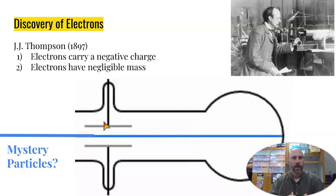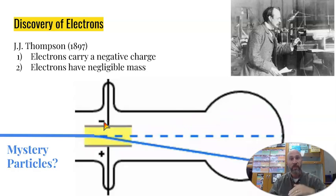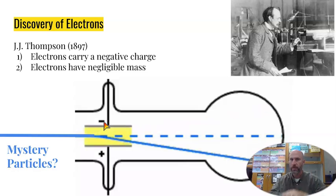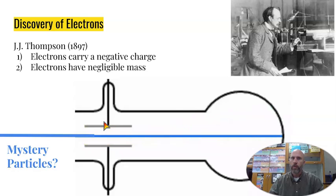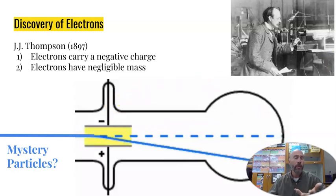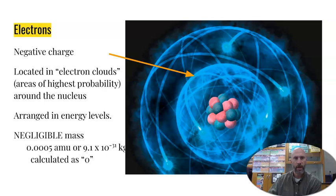If you remember your charges, like charges repel and opposite charges attract. So positive is attracted to negative. If you have two positives they repel. Two negatives, they repel. So from this experiment, because this beam was deflected toward the positive, that led to the conclusion that these particles must carry a negative charge. The other thing that he figured out was because this beam really deflected a lot, a lot more than alpha particles or the other positive particles that they knew about, that led them to the conclusion that these particles must have tiny, tiny, tiny little mass. And what they found in this experiment, this was the discovery of the electron.